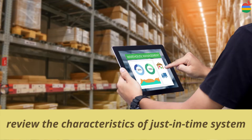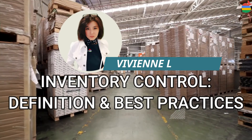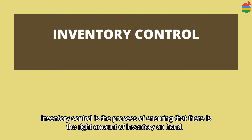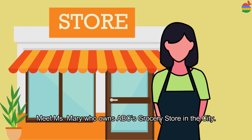In this video you can also verify that you can understand the benefits of a just-in-time system and interpret them correctly. You can also determine what inventory control refers to, review the characteristics of a just-in-time system, and identify inventory control methods. So let's get started. Inventory control is the process of ensuring that the right amount of inventory is on hand.